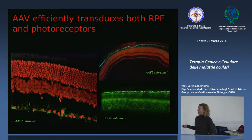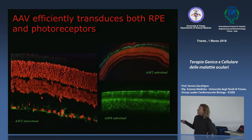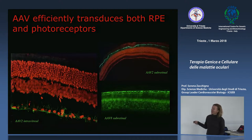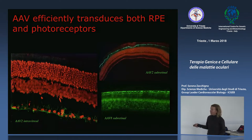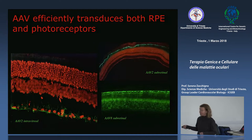AAV è il vettore di scelta per l'occhio: a seconda della via di somministrazione si riescono a targettare cellule diverse. In sezione retinica si riconoscono lo strato nucleare esterno, che rappresenta i nuclei dei fotorecettori, seguito da un secondo strato di nuclei di cellule amacrine e di connessione, e infine le cellule ganglionari della retina il cui assone forma il nervo ottico. Se si somministra un vettore AAV per via intravitreale, le prime cellule incontrate sono le cellule ganglionari della retina.